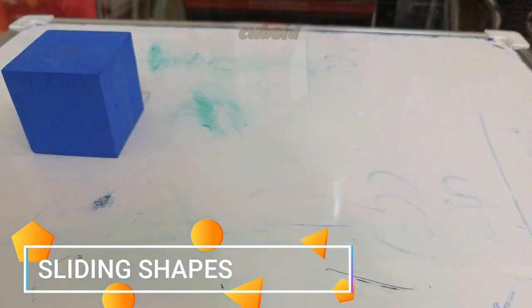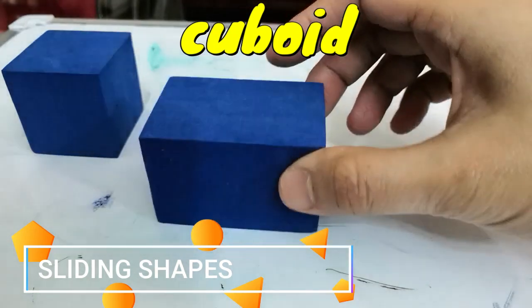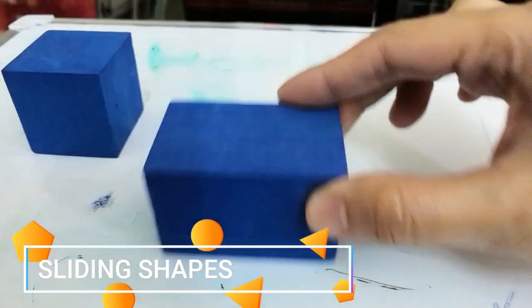A cuboid, or a rectangular prism, also has a flat face. So, it can slide.